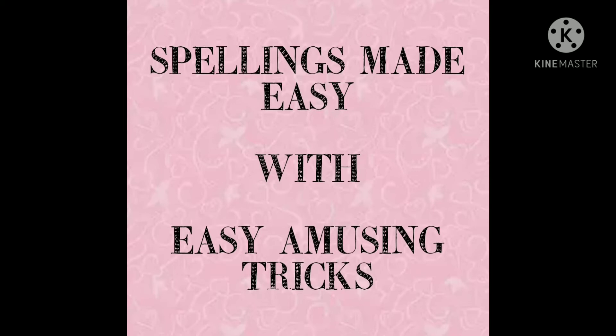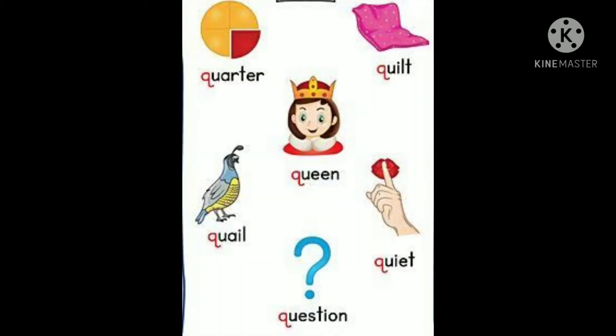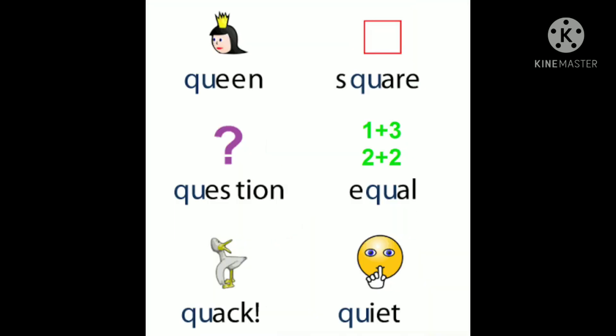Without further ado, let's move on to the first fact. Have you noticed that the letter Q is always followed by the letter U? That's because Q doesn't have a sound of its own and needs the sound of the letter U. Examples: Queen, Quilt, Square, Equal. In all these words, the letter Q is followed by U.